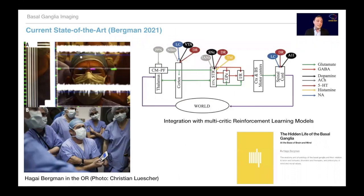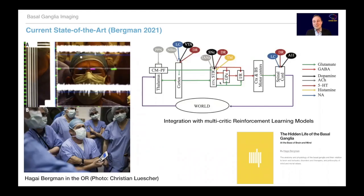What is the current state of the art? One of the basal ganglia experts, Heige Bergman, who you can see here looking at intraoperative data, just wrote a really nice book about the basal ganglia that I must recommend. In his most modern version of the box-and-arrow plots, you can see the classical basal ganglia main axis integrated into a reinforcement actor-critic model that receives dopamine but also input from other neurotransmitters and modulators to shape basal ganglia activity.